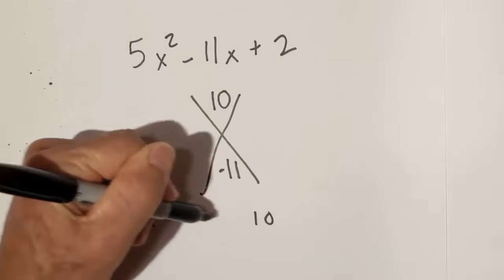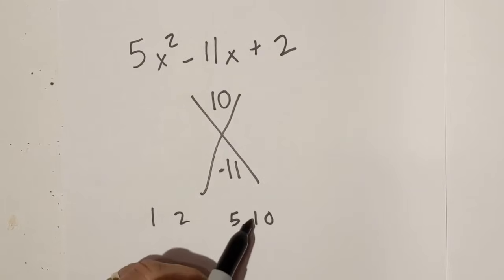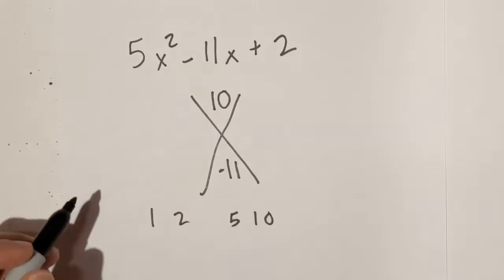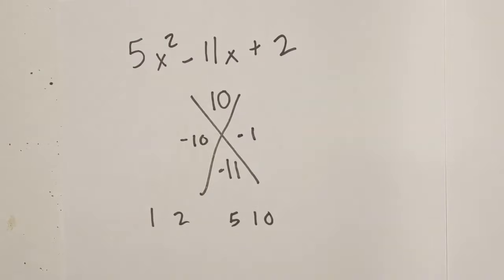What multiplies to 10 and adds to 11? Let's factor 10. It looks like—remember it's going to be negative—negative 1 and negative 10 equals 11, and they multiply together to equal 10. So I'm going to go negative 10, negative 1.